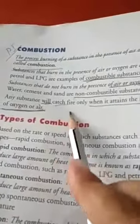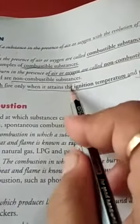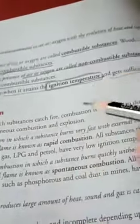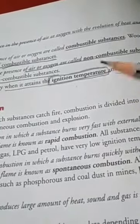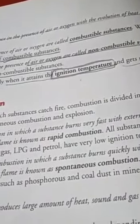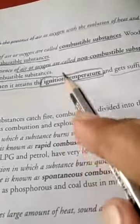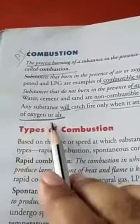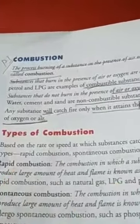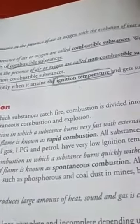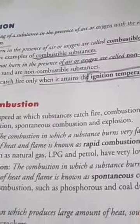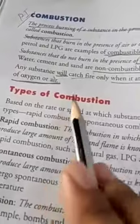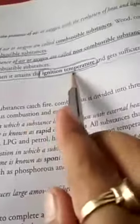Any substance catches fire only when it attains the ignition temperature. What is ignition temperature? It is a temperature which is given to a substance, and after reaching that particular temperature, the substance starts burning. This particular temperature is known as the ignition temperature. A substance also needs a sufficient supply of oxygen or air — so two factors work here: first, a sufficient supply of oxygen, and second, it should reach the ignition temperature.